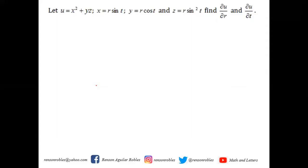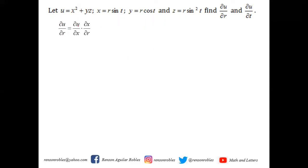We shall apply this definition to find the partial derivative of u with respect to r and the partial derivative of u with respect to t, given that u equals x squared plus yz, and x equals r sine t, y equals r cosine t, and z equals r sine squared t. Here, u is a function of x, y, and z. Then x is a function of r and t, y is also a function of r and t, and so is z. To find du/dr, we write: du/dr equals the partial of u over x times the partial of x over r, plus the partial of u over y times the partial of y over r, plus the partial of u over z times the partial of z over r.